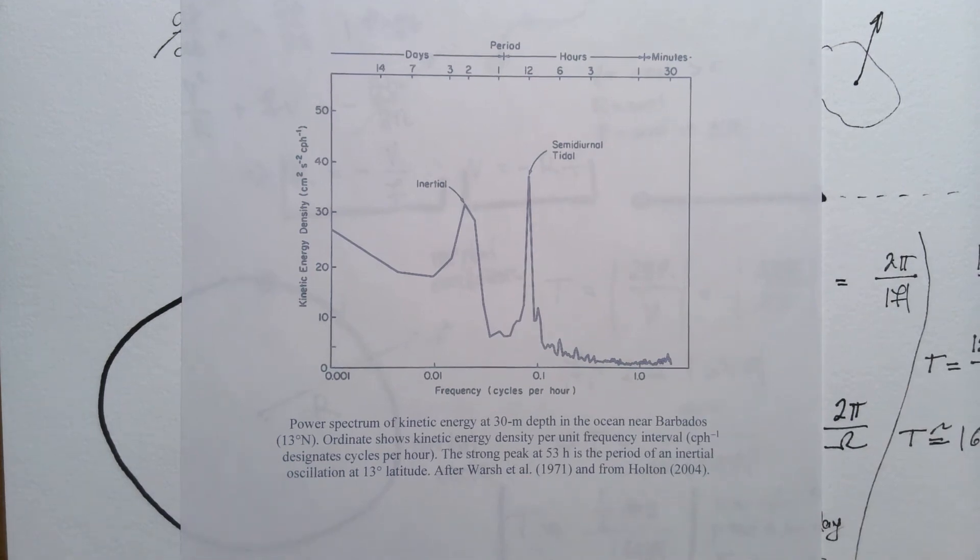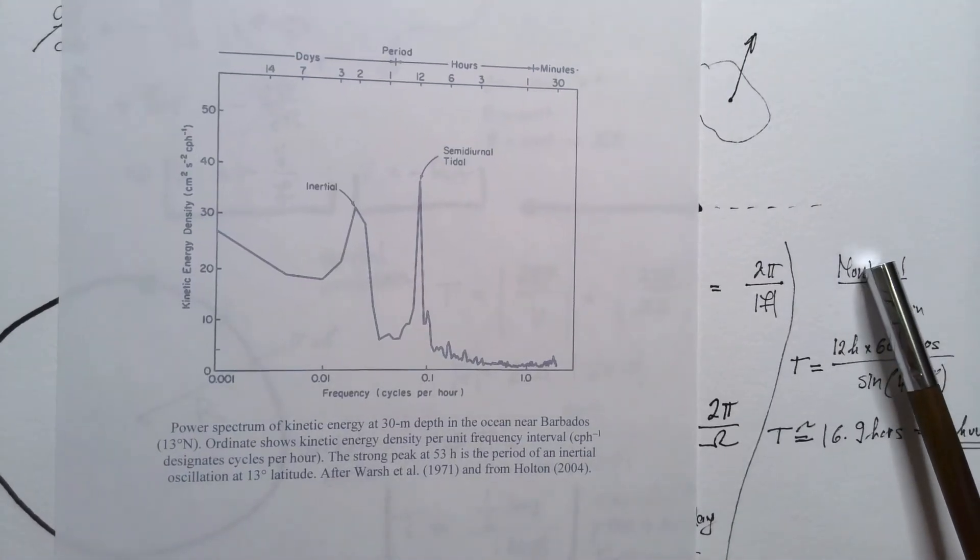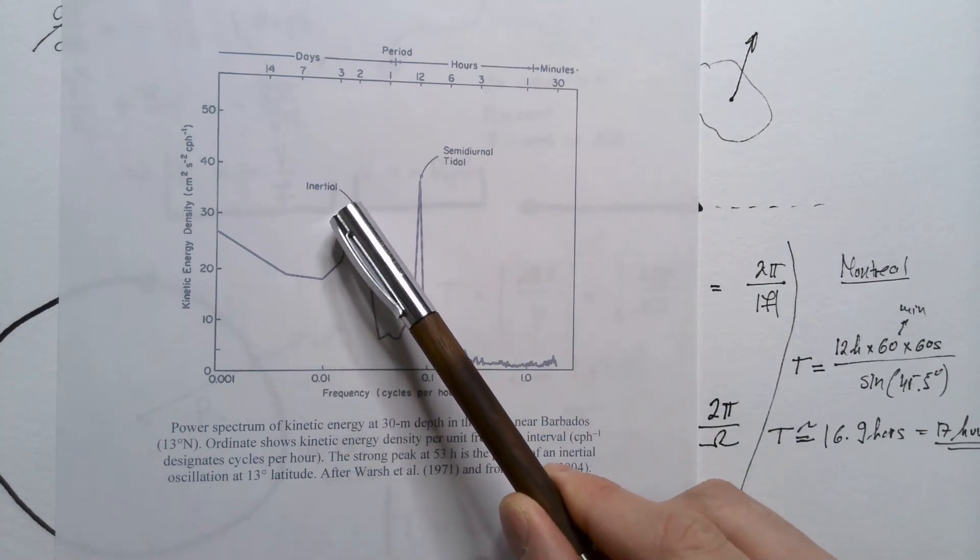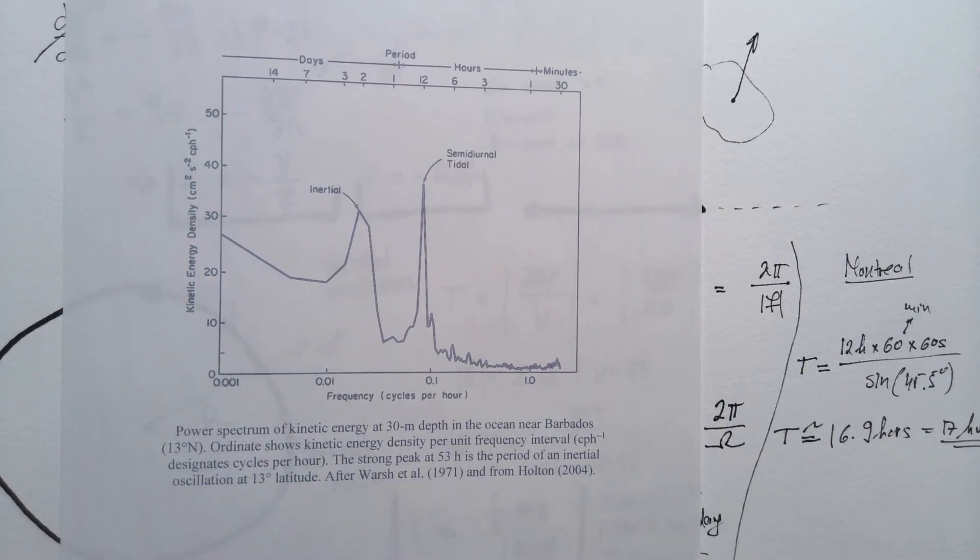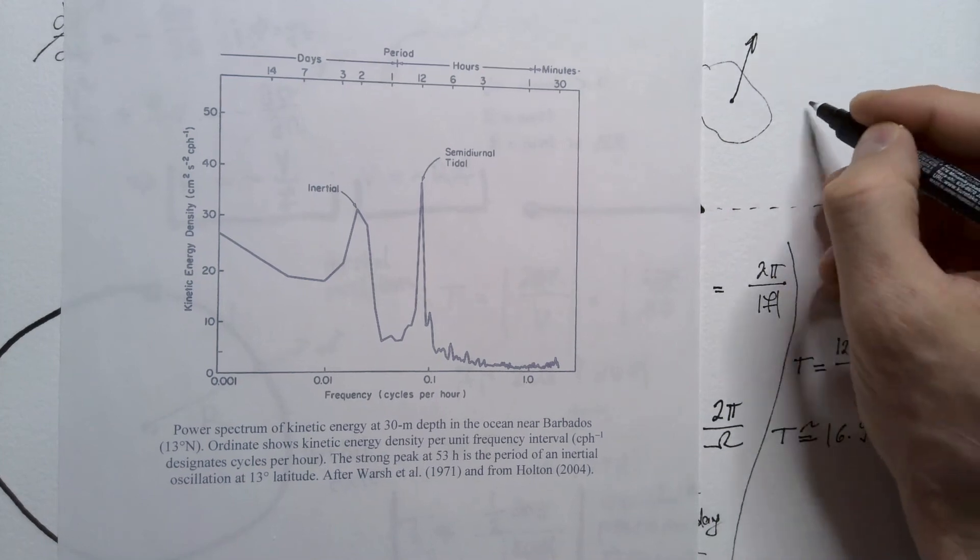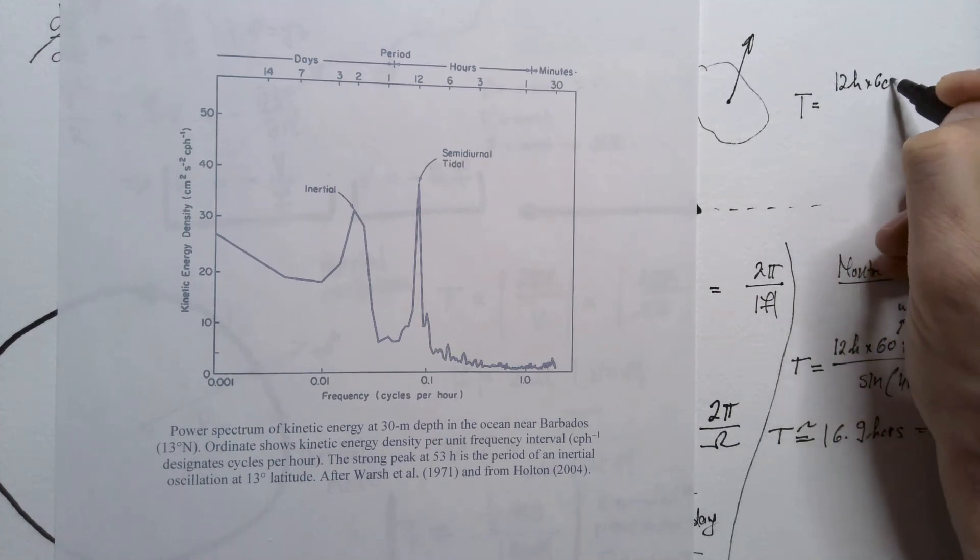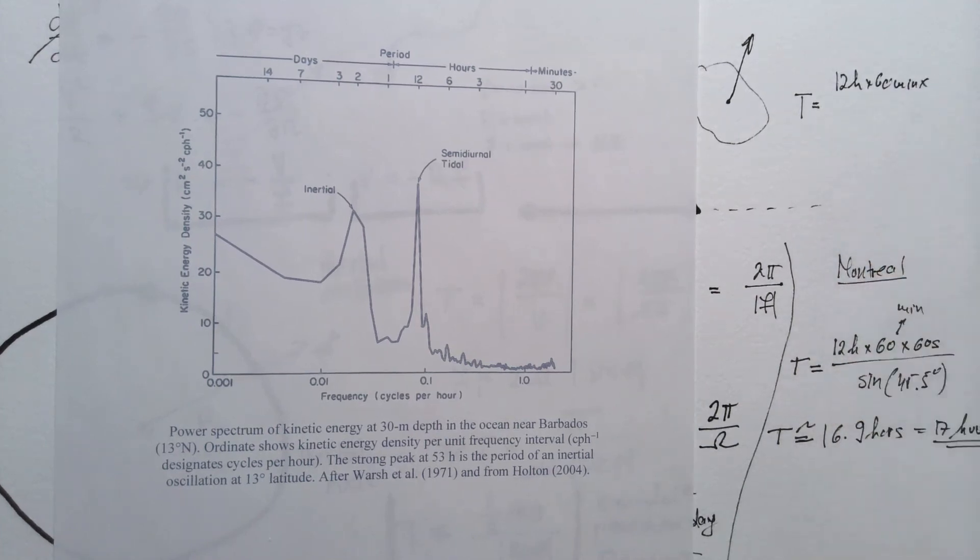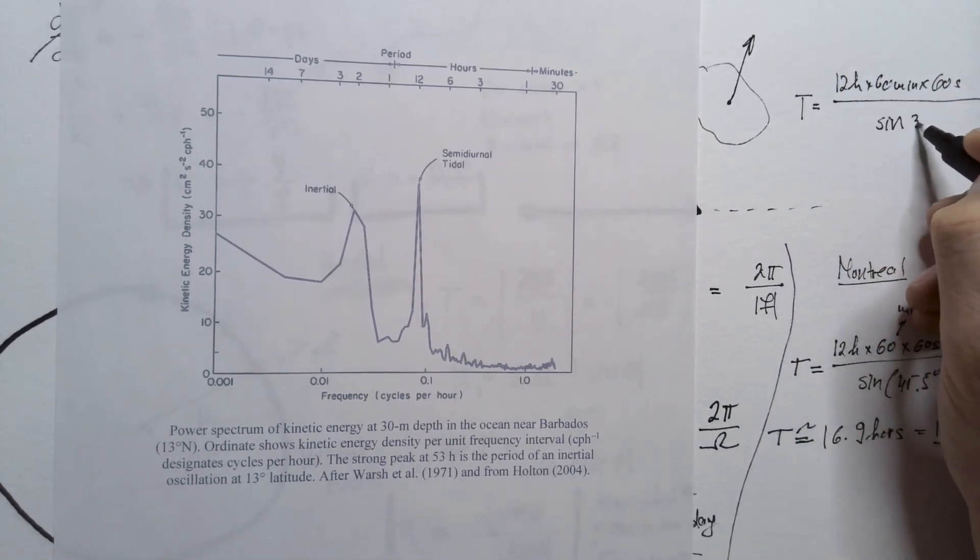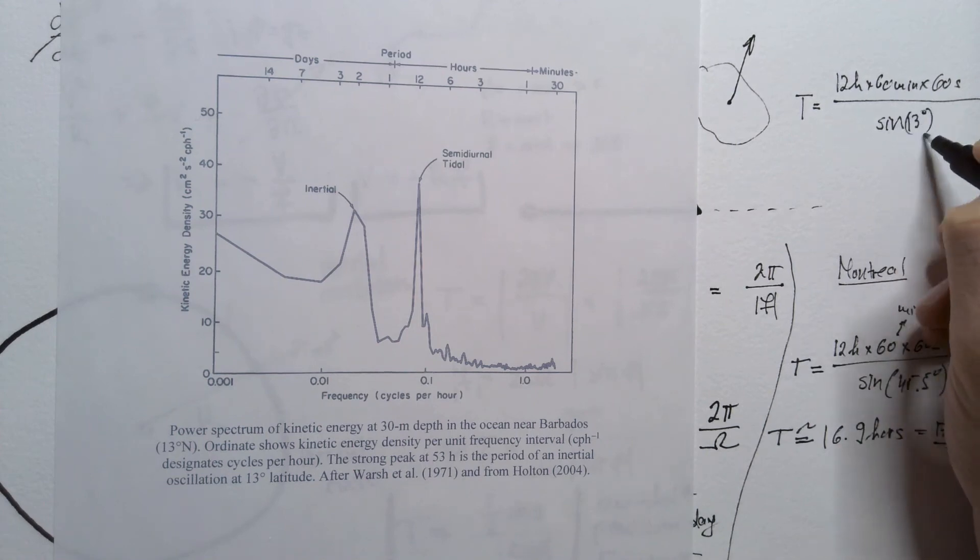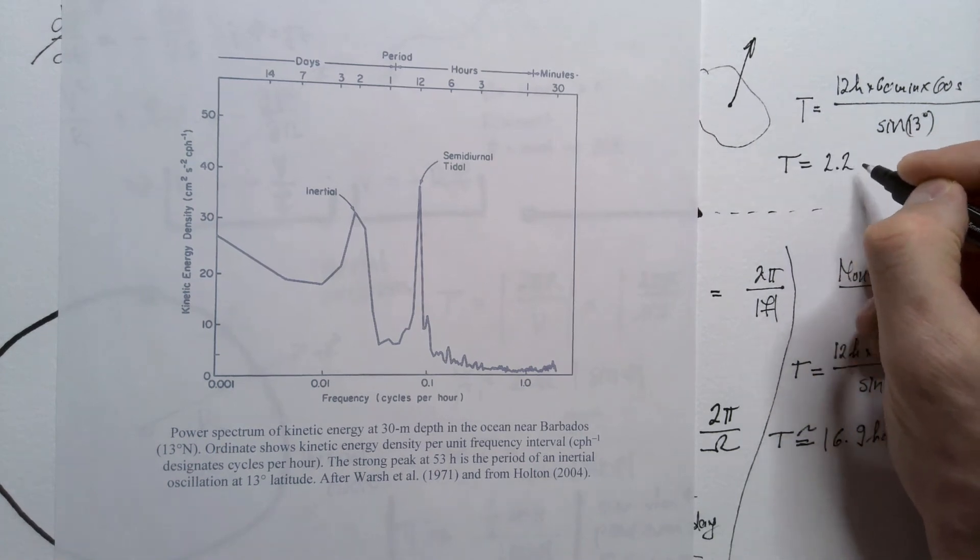Well, that's relatively simple to answer. We will calculate, just as I did in the case of Montreal, I will now calculate period of inertial oscillations near Barbados, which is 13 degrees north. So, let's do it. We have period is equal 12 hours times 60 minutes times 60 seconds divided by sine of 13 degrees. And if you plug in these numbers, you will get that this is 2.2 days.